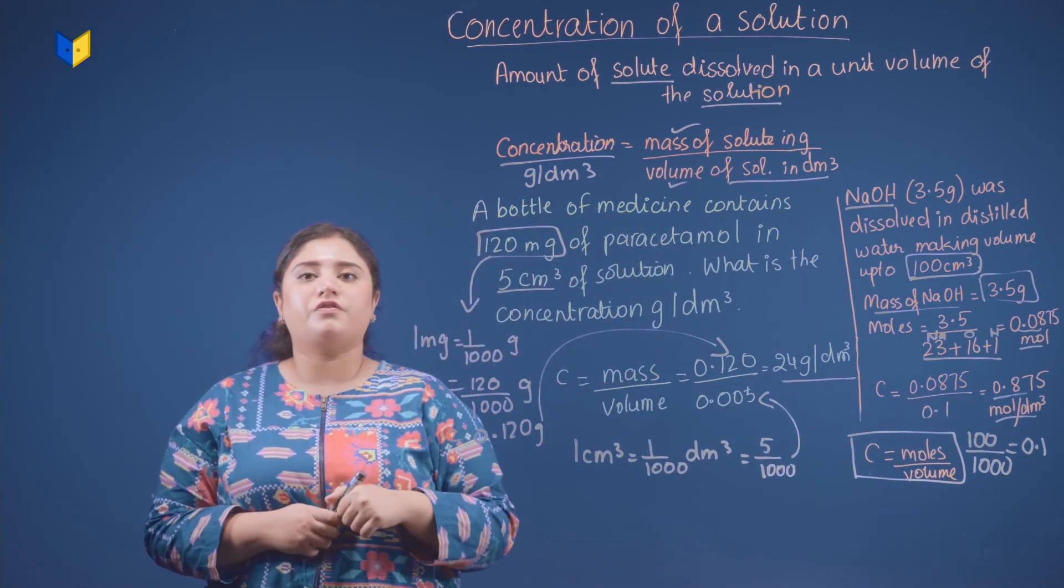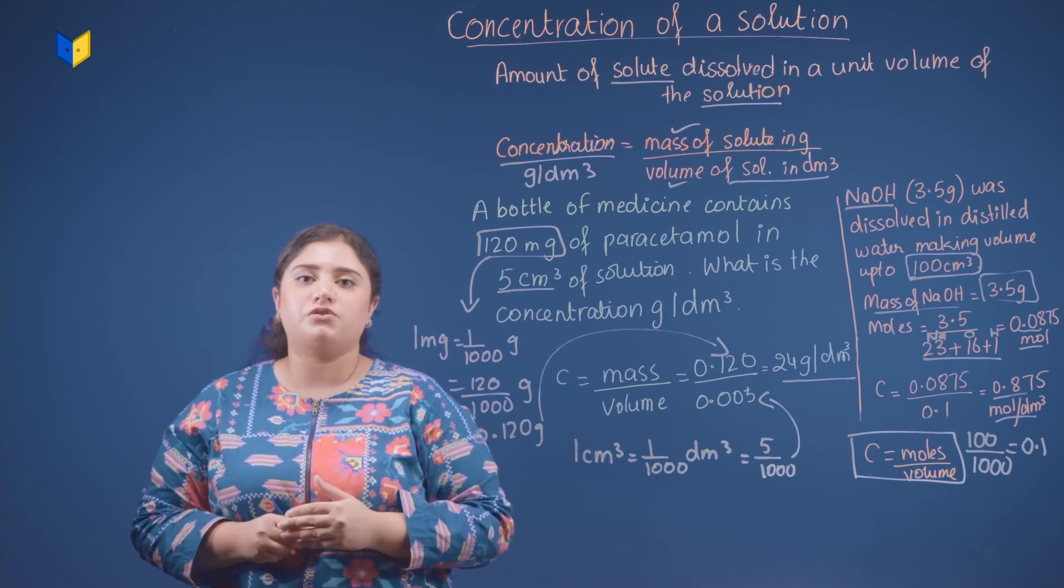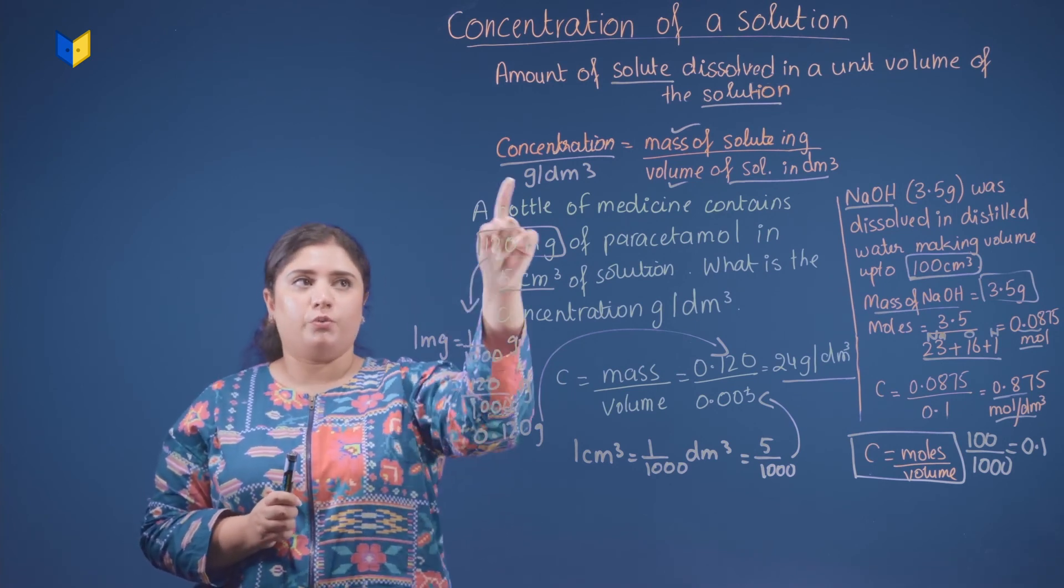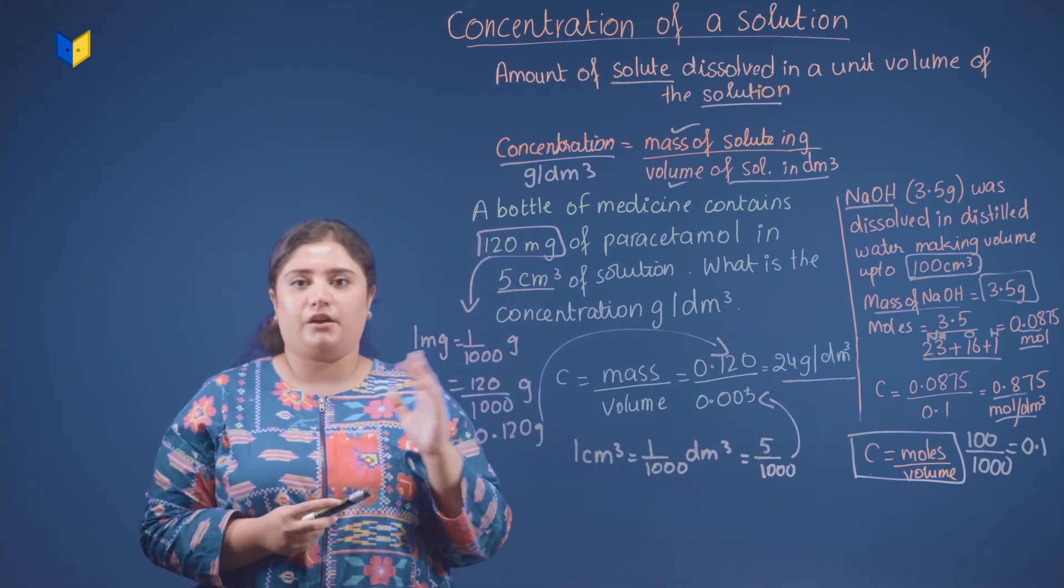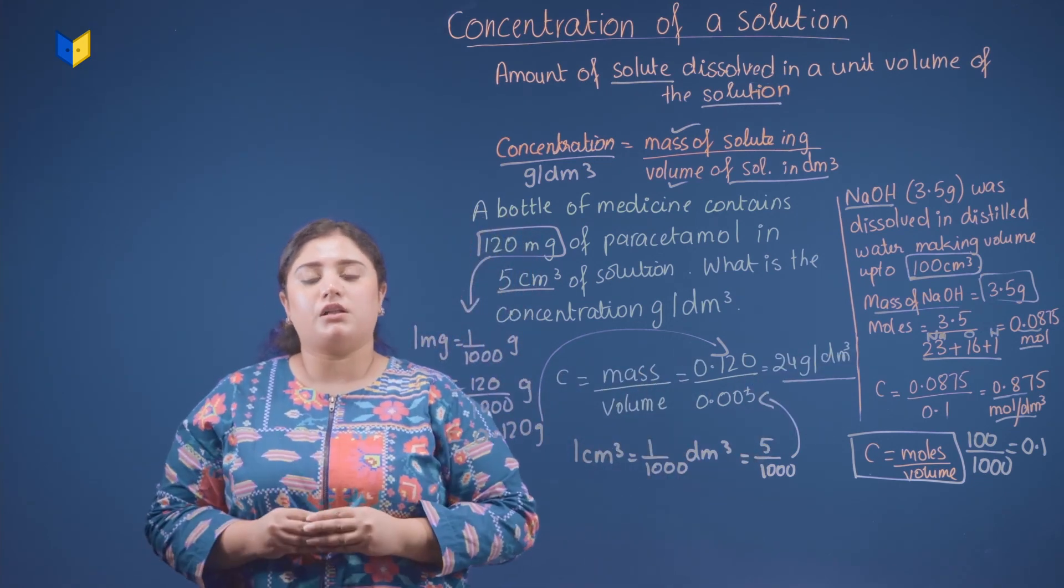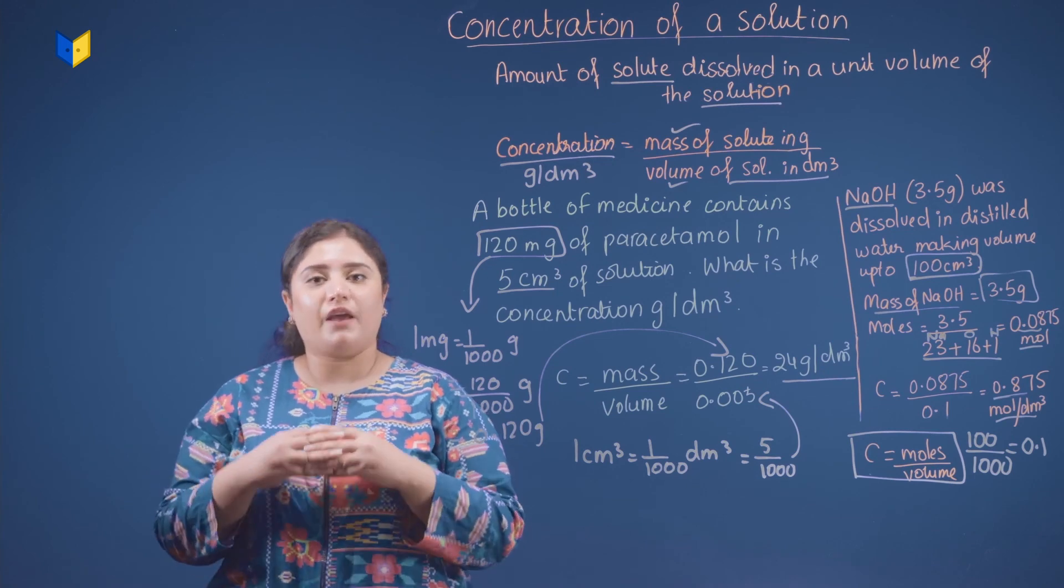Now, what are the units of concentration? The units of concentrations are gram per dm cube, which is right here, and the other one is mole per dm cube, which is right there. So it was all about concentration of solution. If you have any query, do let me know.